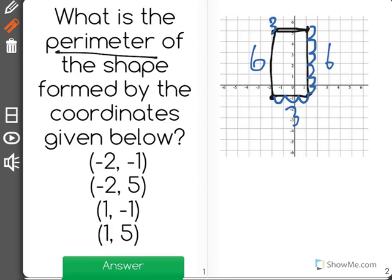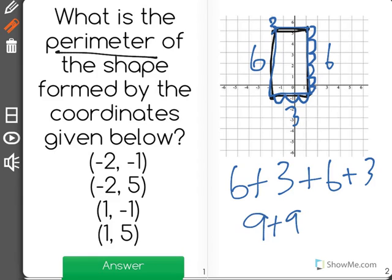So I have 6 on this side, plus 3 going across, plus 6 going up, plus 3 going across, which is equal to 9 plus 9, or 18, the perimeter of the shape.